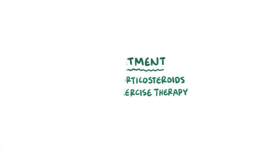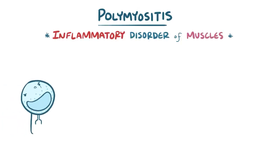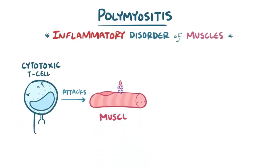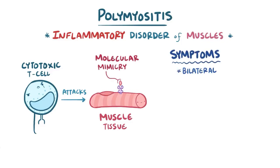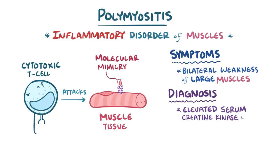Alright, as a quick recap. Polymyositis is an inflammatory disorder of the muscles, caused mainly by cytotoxic T cells destroying muscle tissue due to molecular mimicry, and this results in bilateral proximal muscle weakness of large muscle groups. Its diagnosis involves elevated serum creatine kinase as well as anti-JO1 antibodies, and it's treated with corticosteroids.